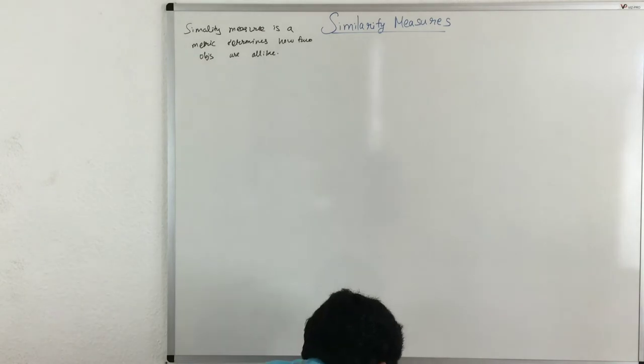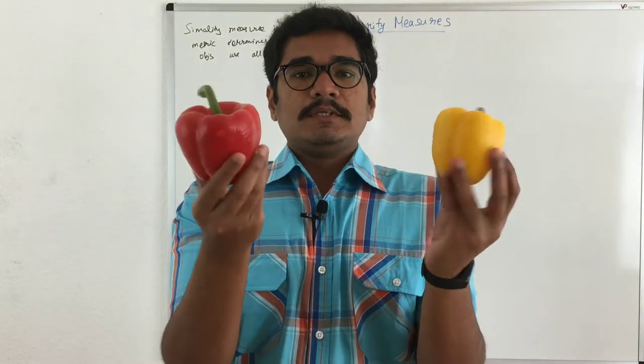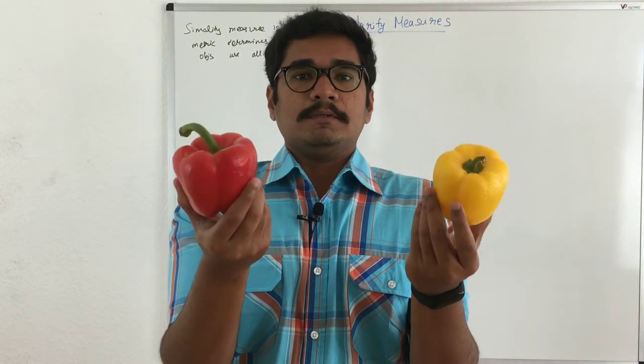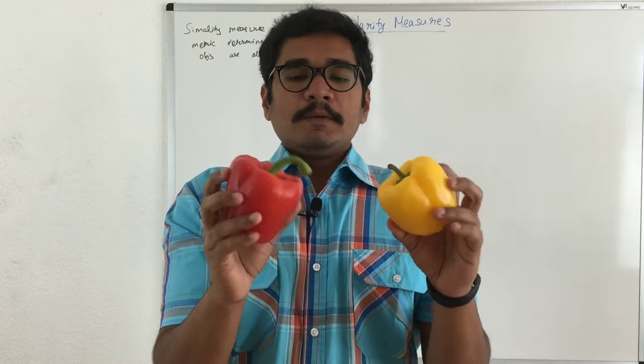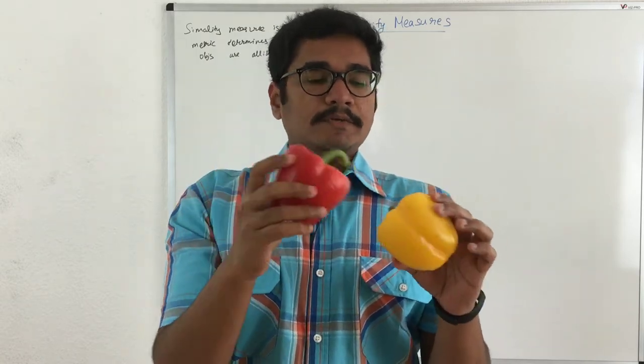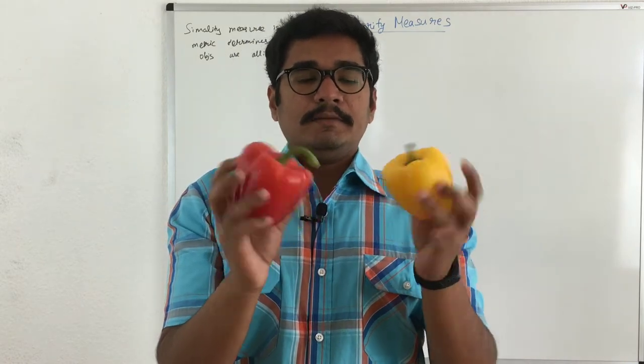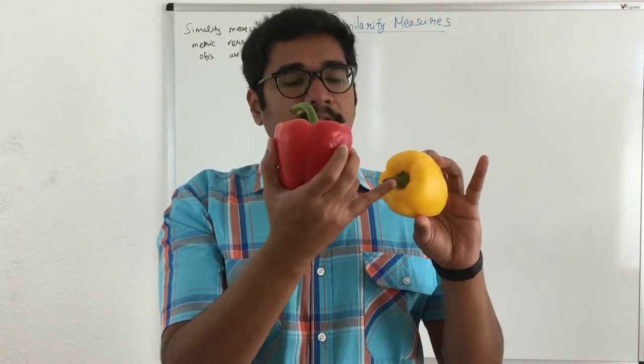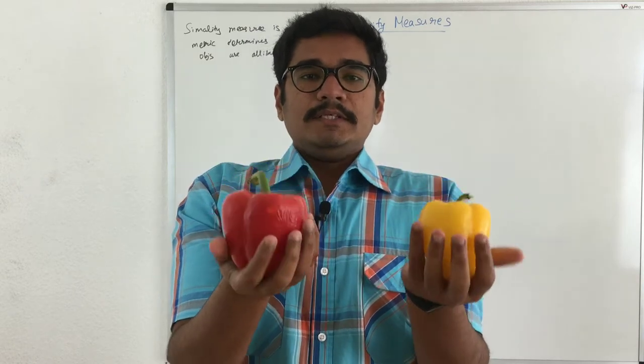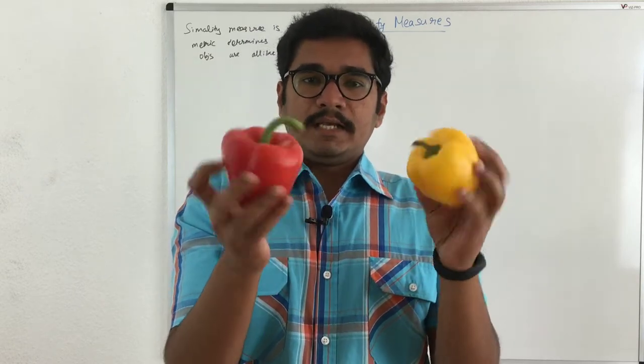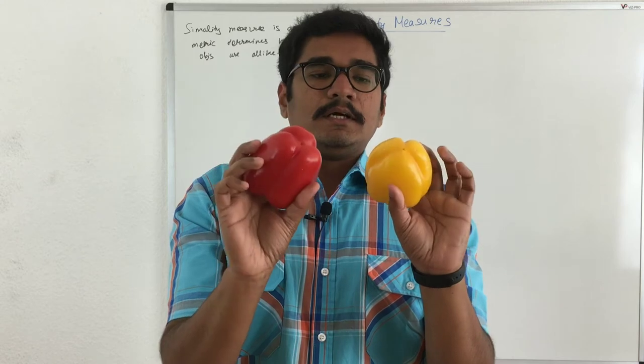Now, say for instance, we have these two. So these are called as paprika or capsicum. So basically if we find out the features or different characteristics, say we have same color of stem that is green. Just don't go for the length of this. Then we have the same dimensions. It looks exactly the same at the bottom.